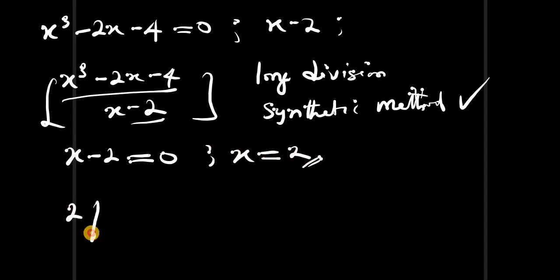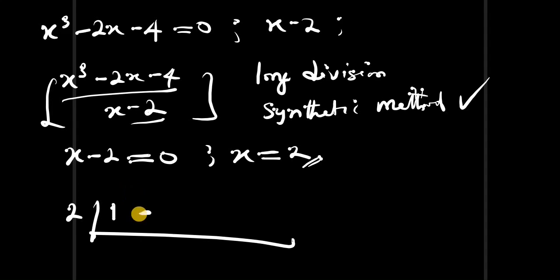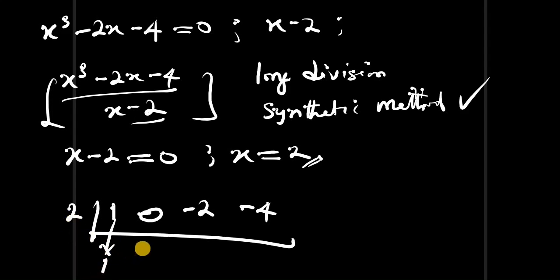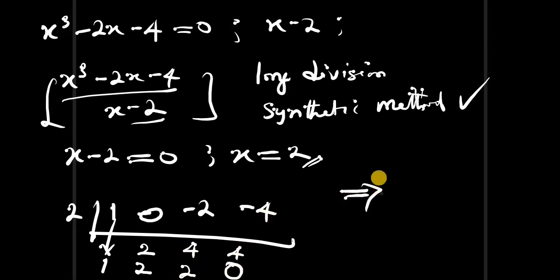We write 2, then list the coefficients of the numerator: 1 for x cubed, 0 for x squared (since there is no x squared term), negative 2 for x, and negative 4 as the constant. Bringing down the 1: 2 times 1 is 2; 0 plus 2 is 2; 2 times 2 is 4; negative 2 plus 4 is 2; 2 times 2 is 4; negative 4 plus 4 is 0.